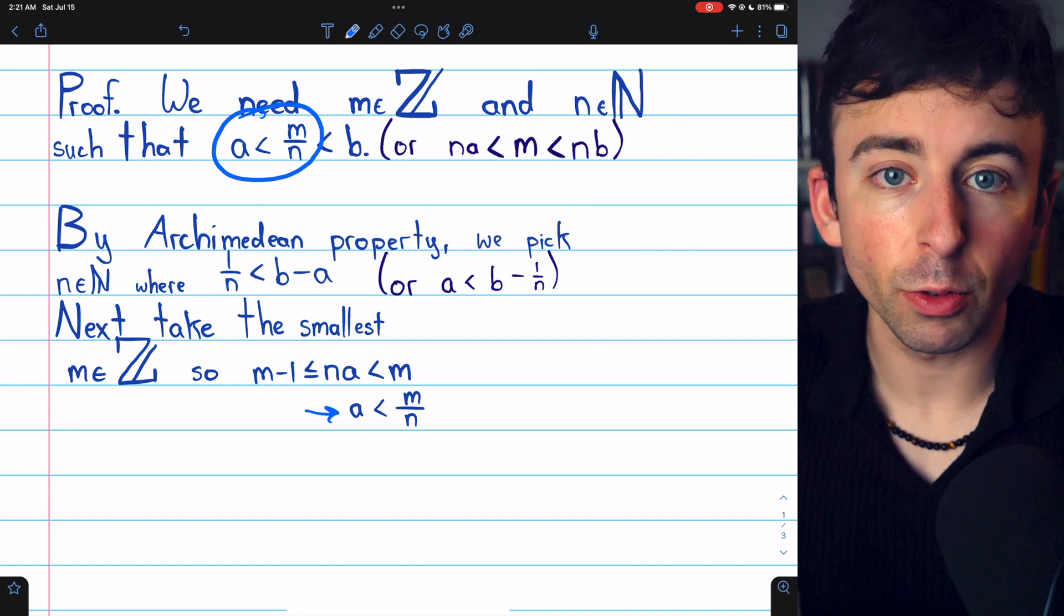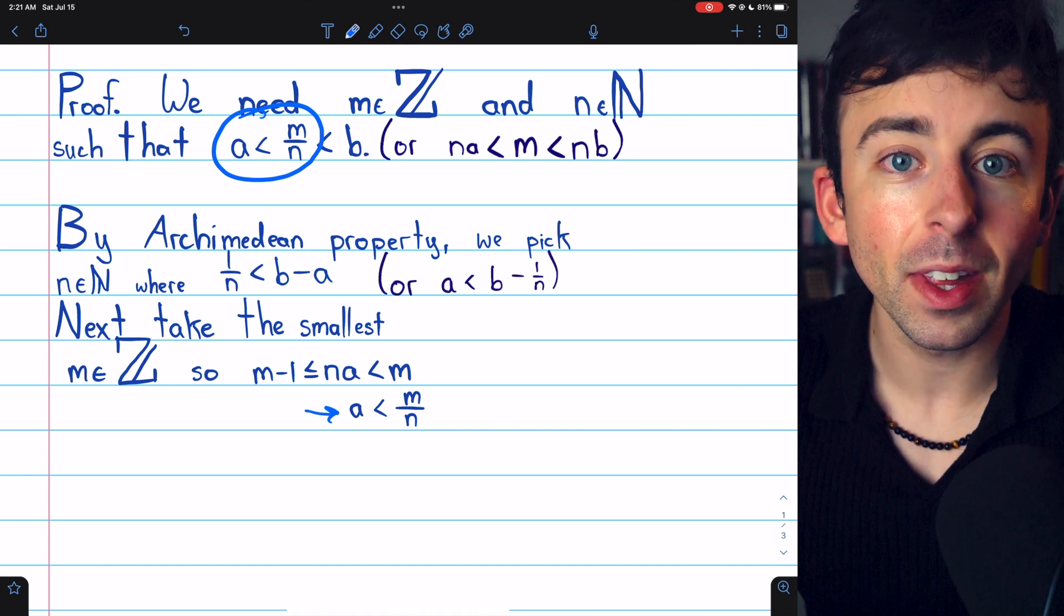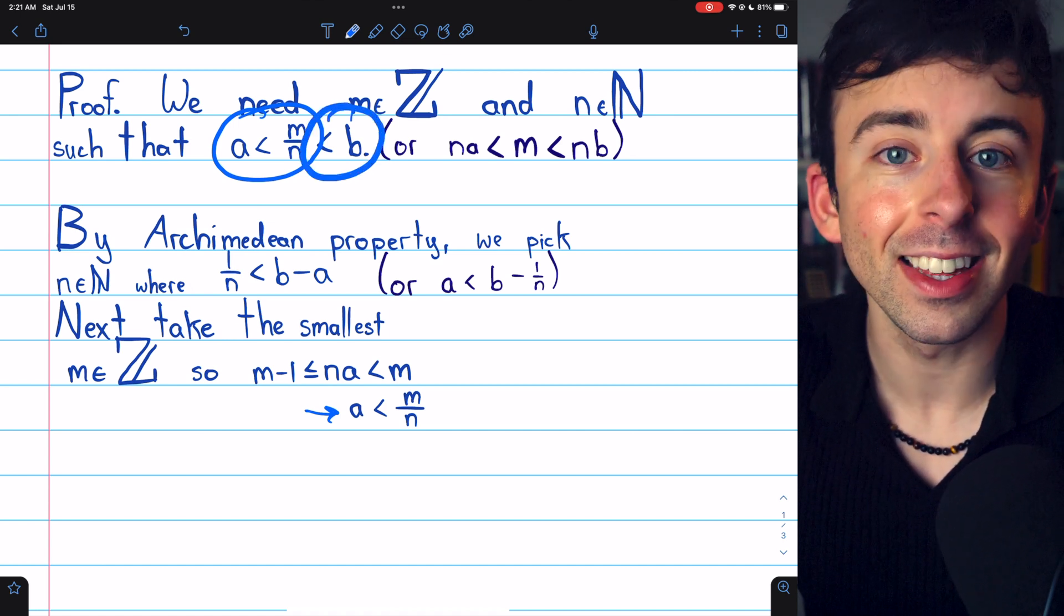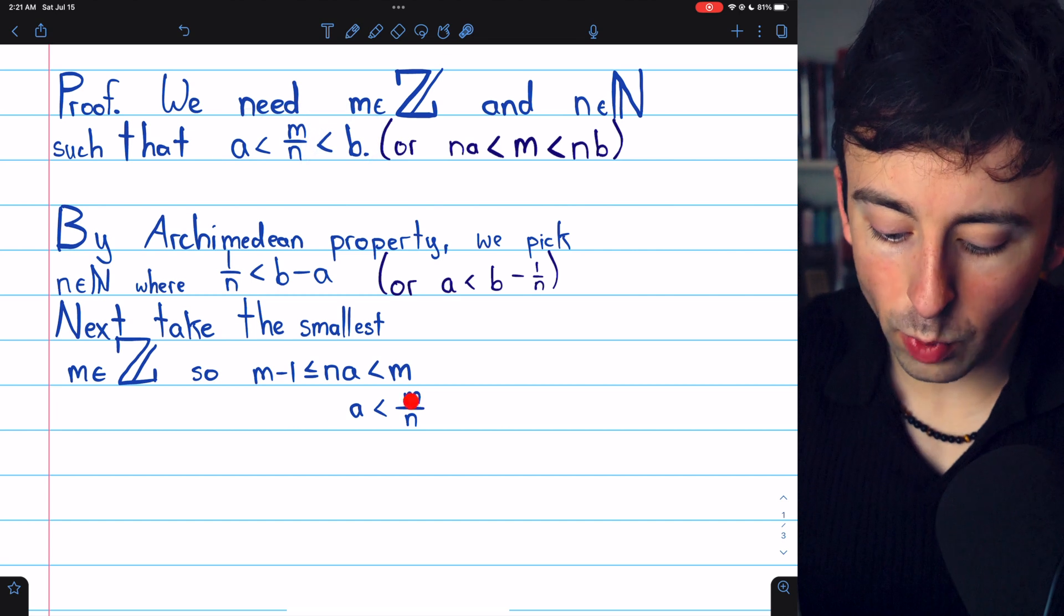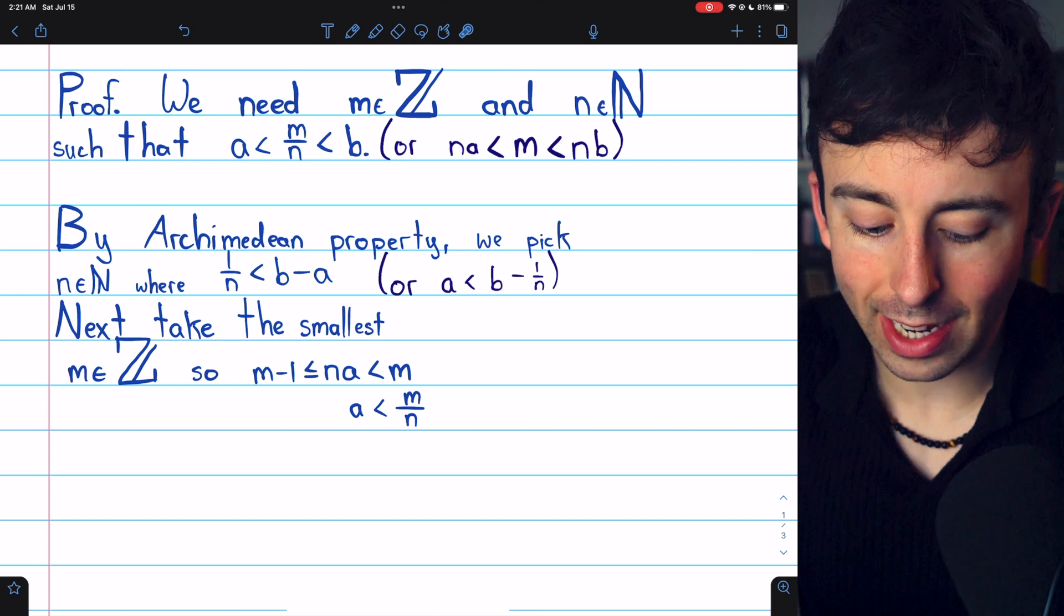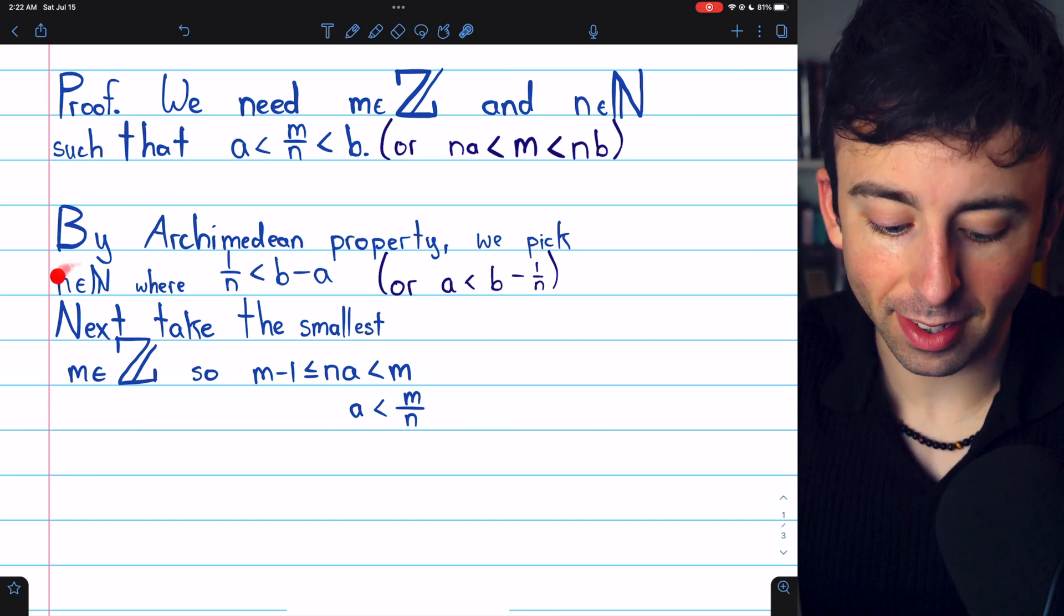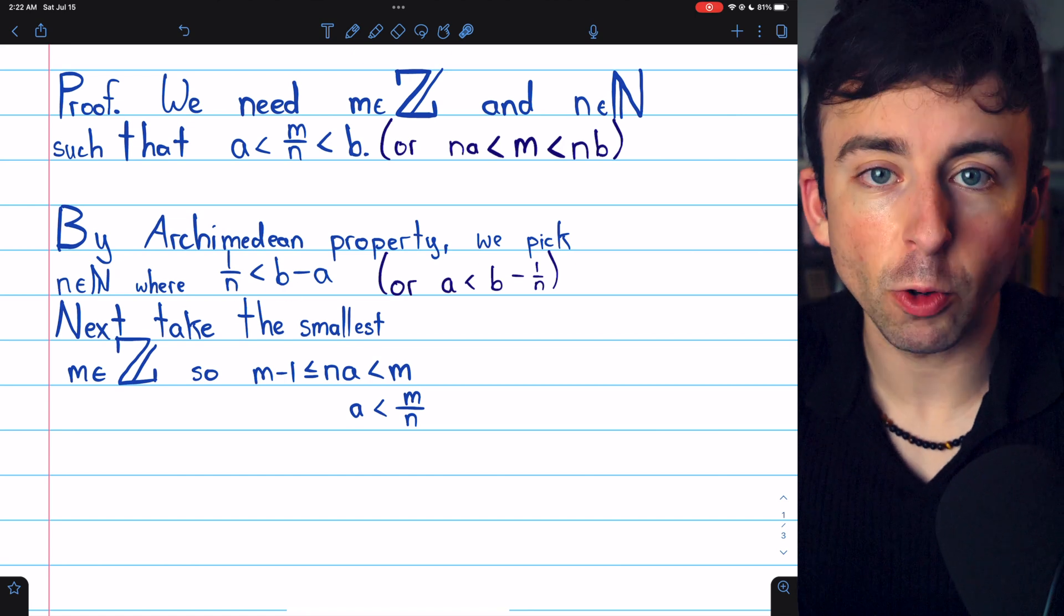We've shown that there is this rational number, M over N, that's greater than A. Now we just need to show that it's less than B. Also note that when we divide by N here, we know we don't have to flip the inequality because N was taken to be a natural number. We apply the Archimedean property to get this sufficiently big natural number.